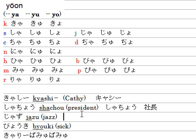The next word is Jazz. As I said, just simply type J-A, then Z-U, giving Jazz. It should be katakana because it's a foreign word, so convert it to katakana by hitting the space key.